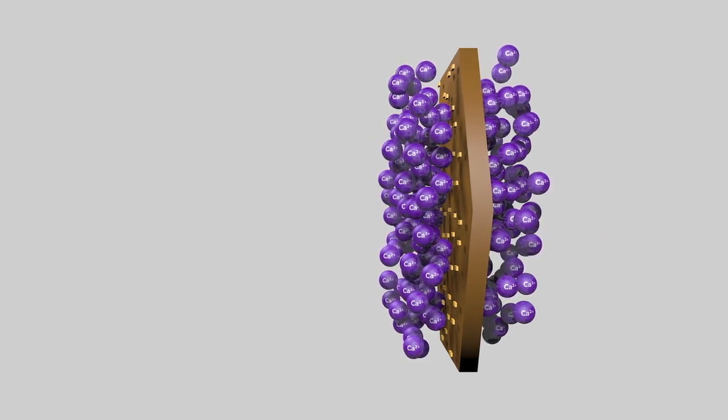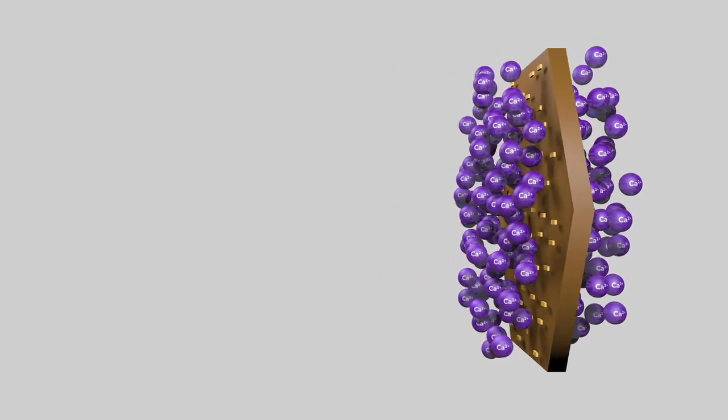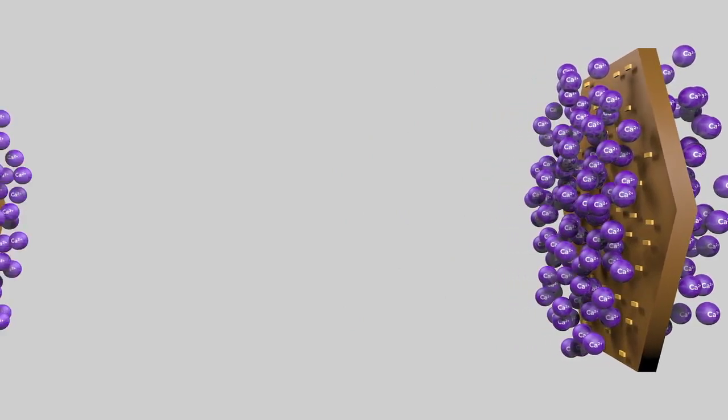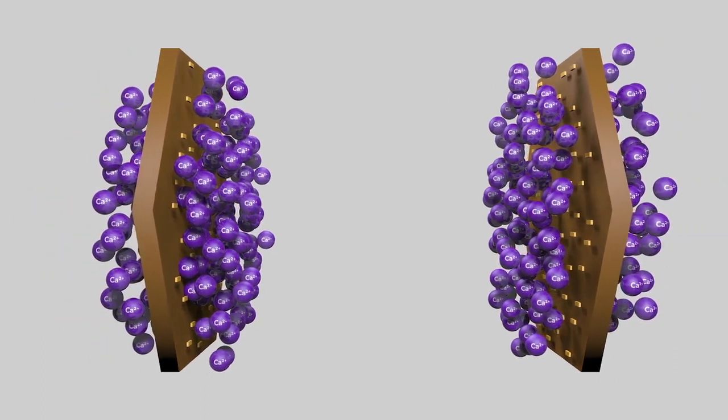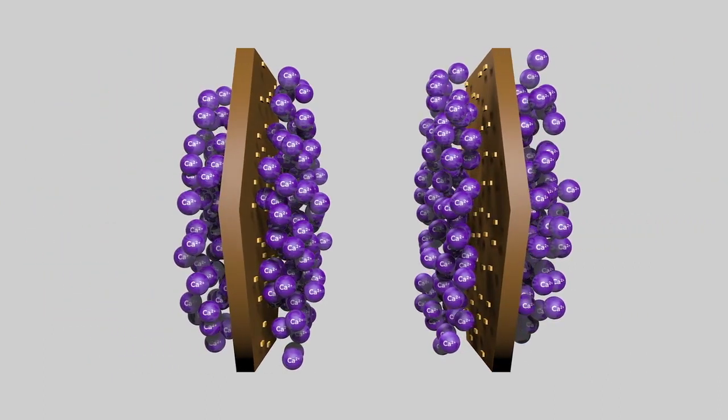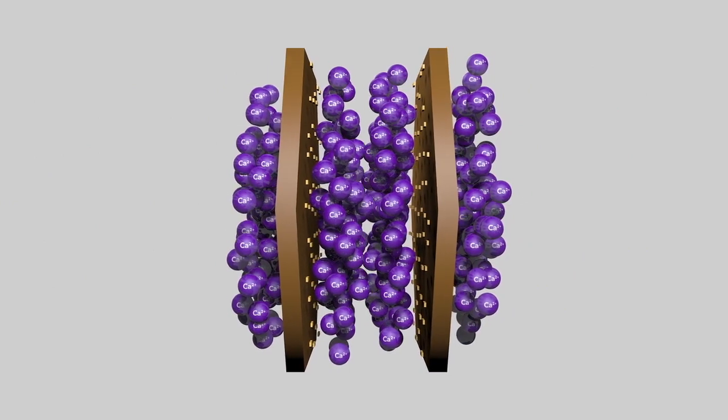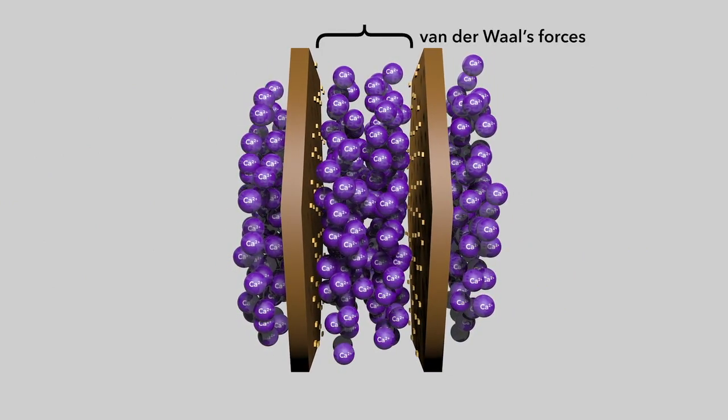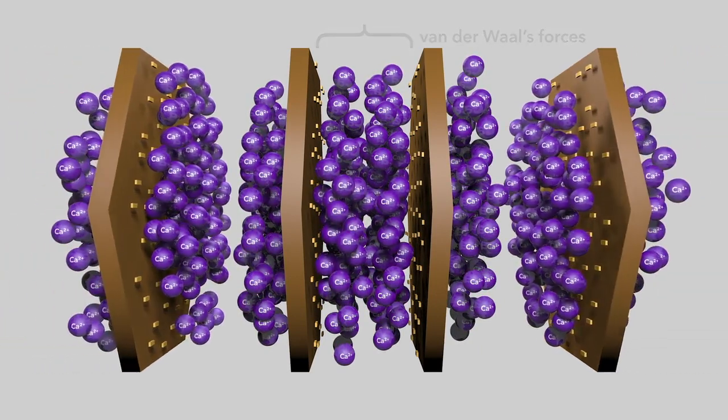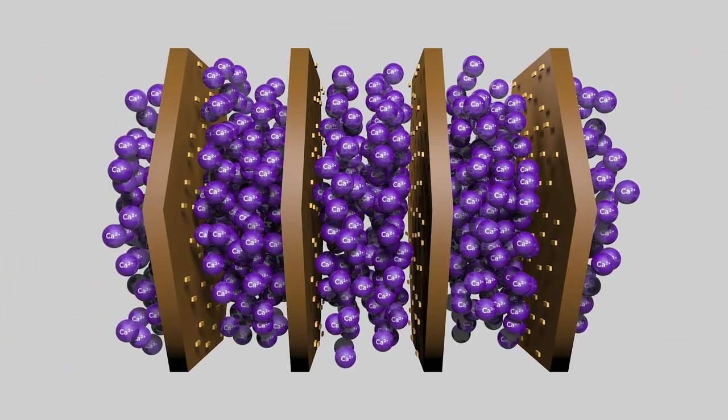And when two clay platelets dominated by calcium ions approach each other, the tightly adsorbed clouds of calcium ions are not an impediment, and the clays can become joined together by weak forces called van der Waals forces. This clinging of the clay particles together is called flocculation.